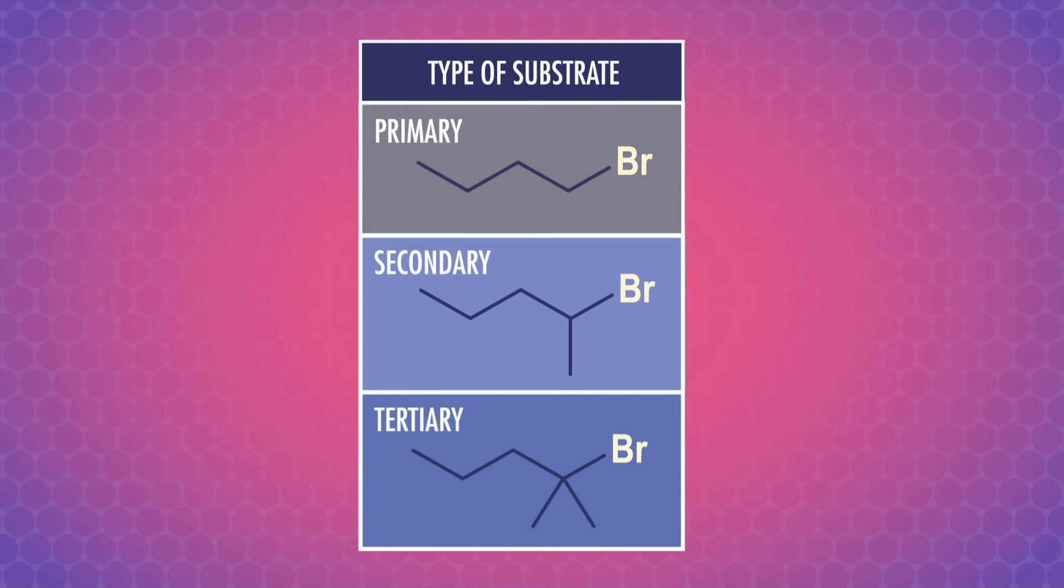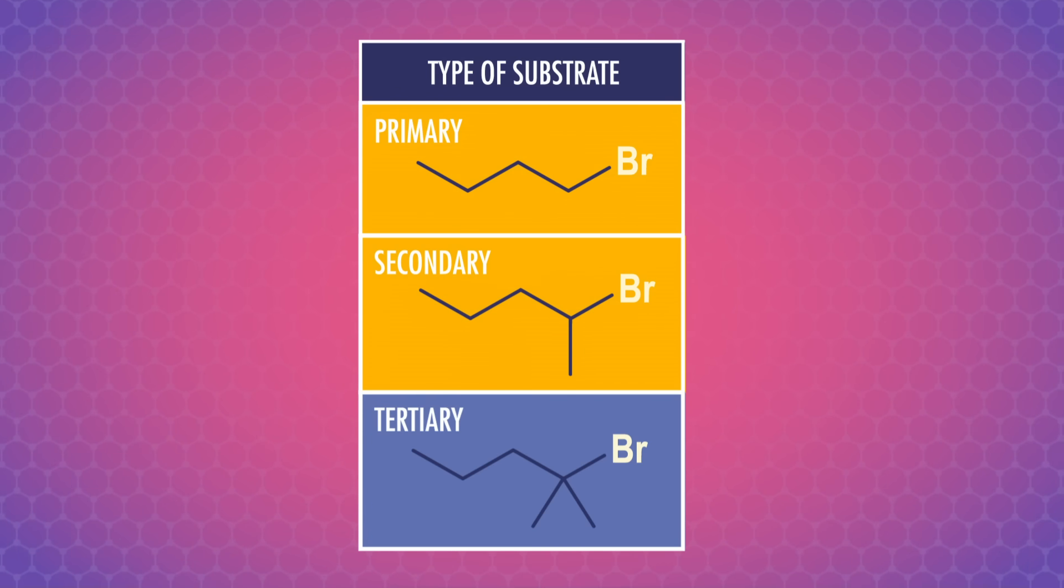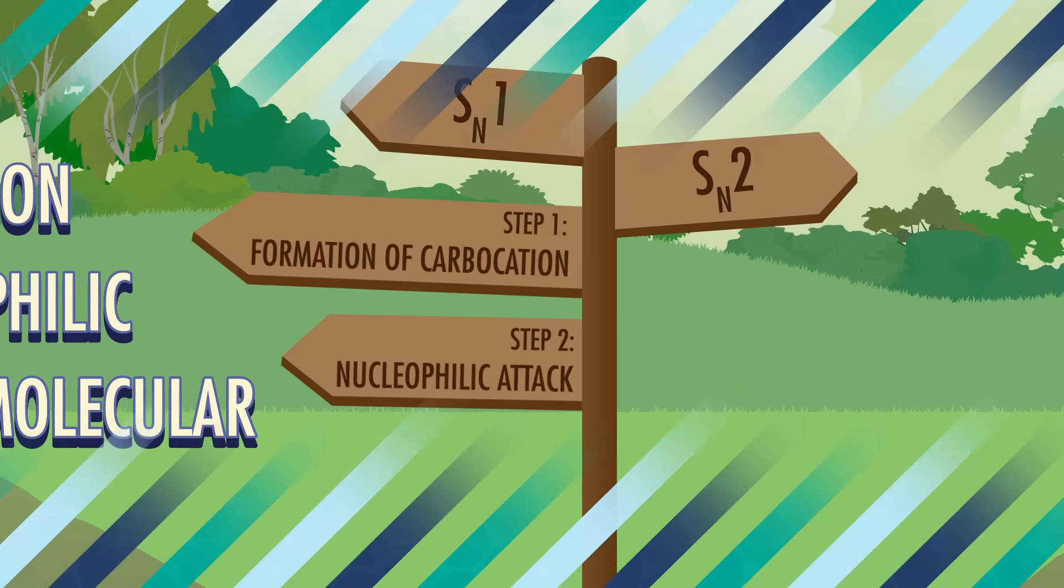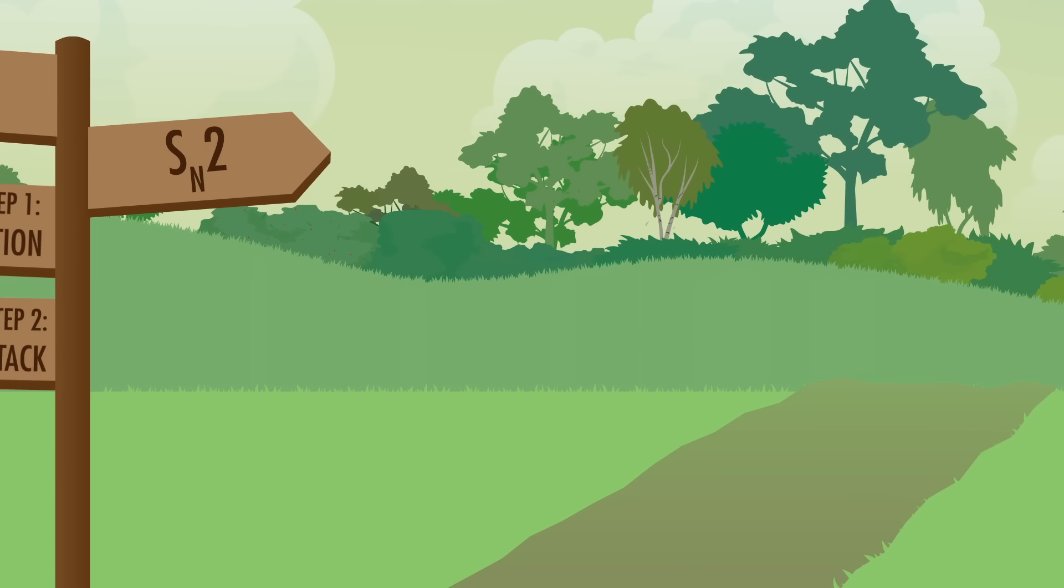Now, this is key. Carbons that have three bonds to a carbon make tertiary carbocations, and their substitution reactions happen via an SN1 mechanism. But substrates that have one carbon substituent, called primary, or two carbon substituents, called secondary, usually take a completely different path. They follow an SN2 mechanism.